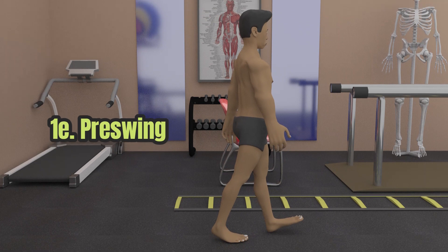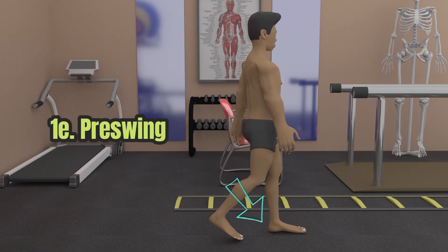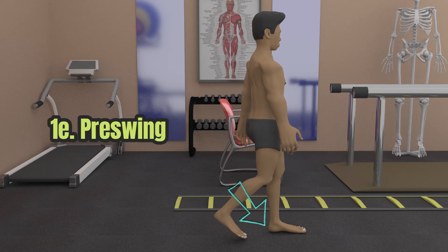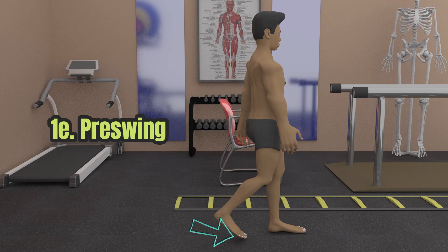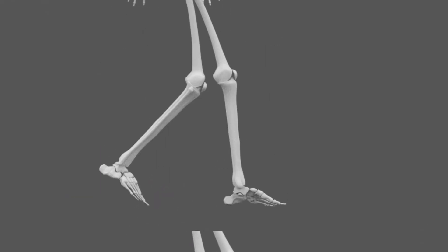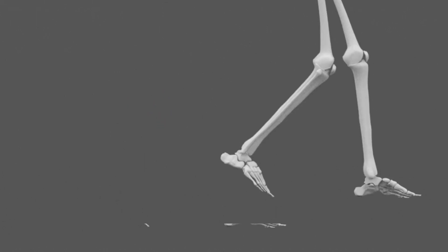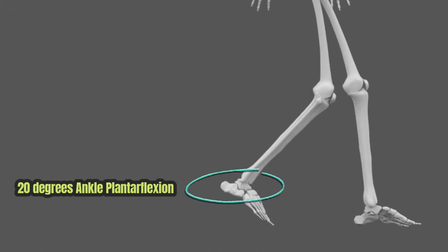The final sub-phase of the stance phase is the pre-swing. This starts when the opposite heel contacts the ground and ends at toe-off. The hip is still in 15 degrees of hyperextension, while the knee flexes to 30 degrees and the ankle plantar flexes to 20 degrees.